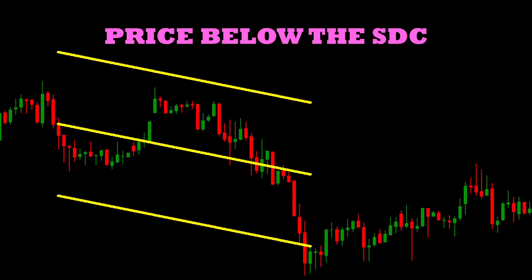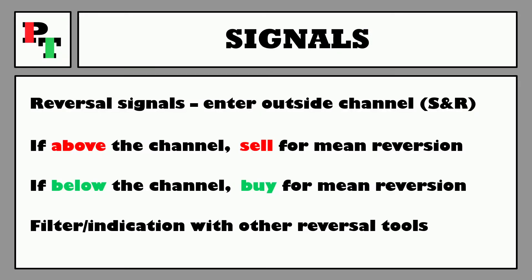Another example, this time price closing below the SDC. And no surprise that this example does go in our favour. We'd be in a buy trade right at the bottom where price closes outside of the channel. This time a more modest win compared to the last example, but a win nonetheless. Never forget though that these signals are not the be-all and end-all. You don't need to have your direct entry signals coming out of the SDC — the channel could just be a filter, or as the name suggests, an indication merely utilised with other reversal tools or indicators.